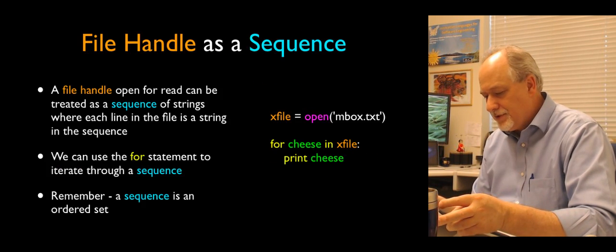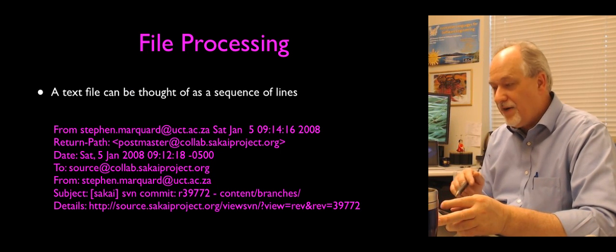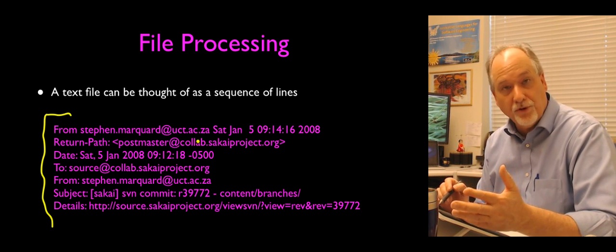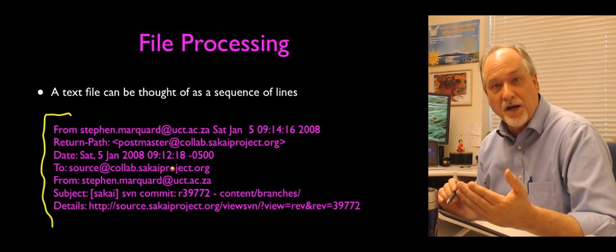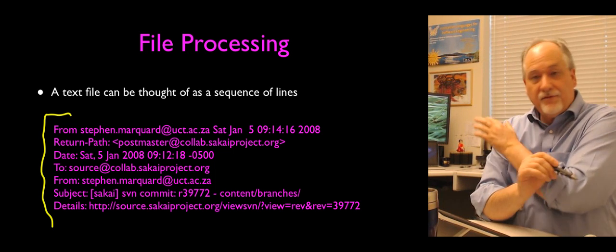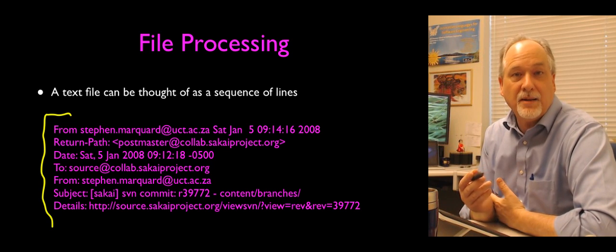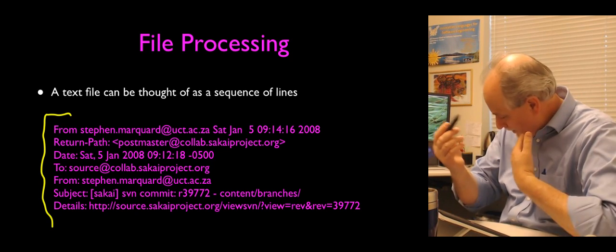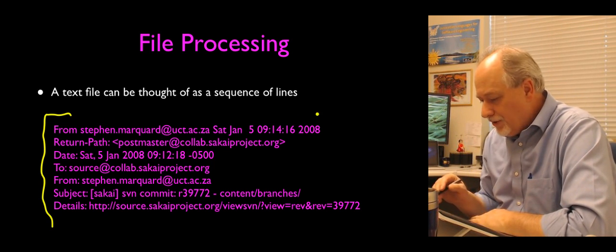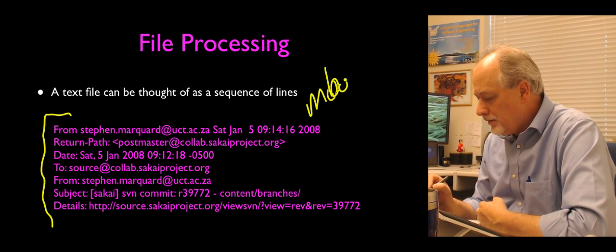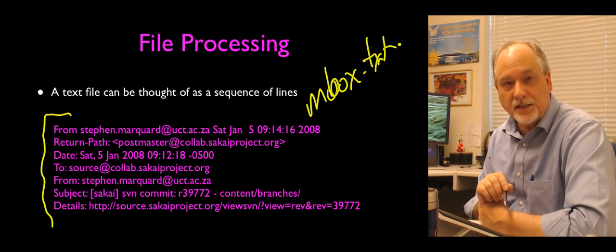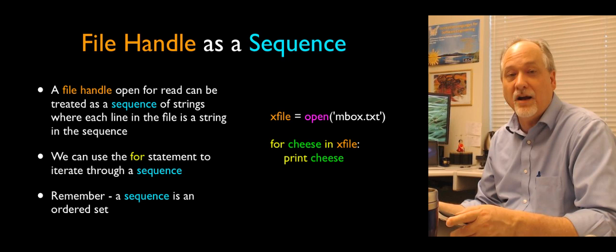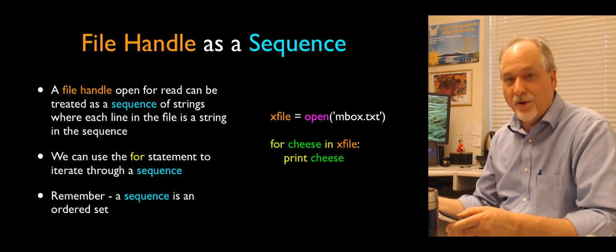The file we're going to play with in this class is a mailbox file — mbox.txt. This is actual real data with real people and real dates, relating to an open source project called Sakai. This file will be used for most of the next few assignments. You'll get to know all these people — Stephen, Chen Win, and others in the file.